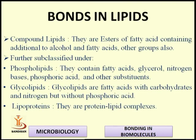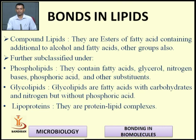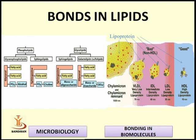Compound lipids are esters of fatty acids containing additional groups besides alcohol and fatty acids. They are further subclassified into phospholipids, glycolipids, and lipoproteins. Phospholipids contain fatty acids, glycerol, nitrogenous bases, phosphoric acid, and other substituents. Glycolipids are fatty acids with carbohydrate and nitrogen but without phosphoric acid. Lipoproteins are protein-lipid complexes.